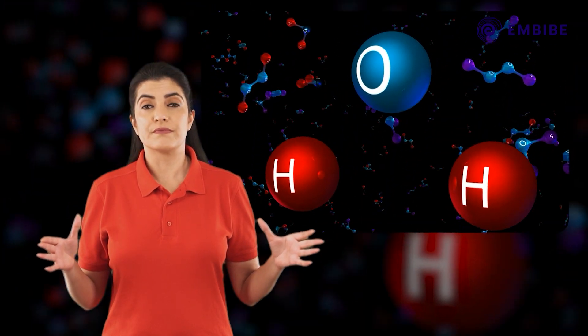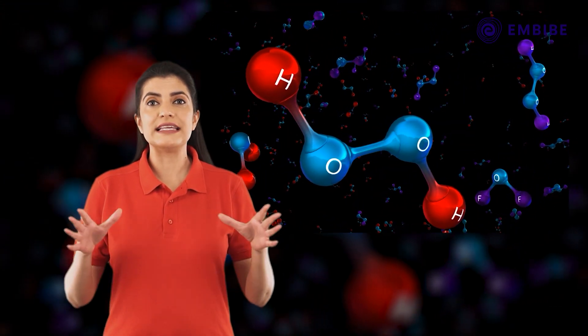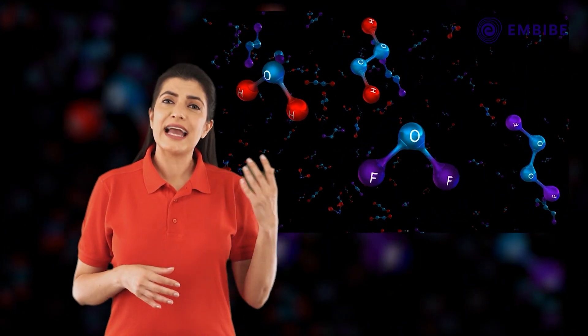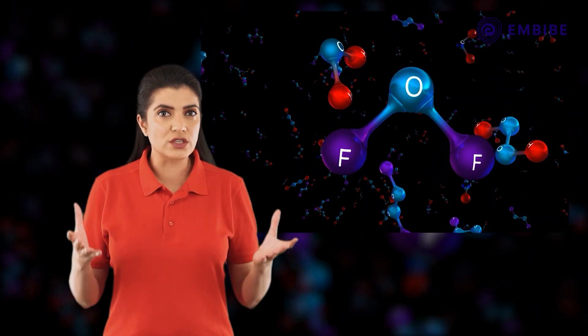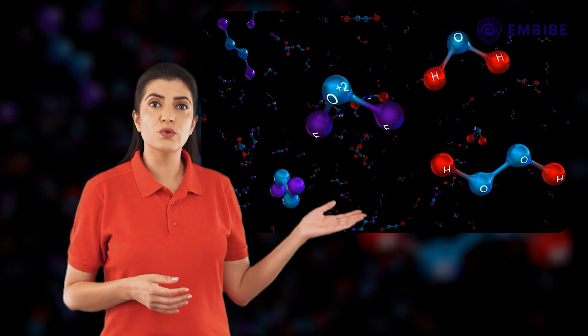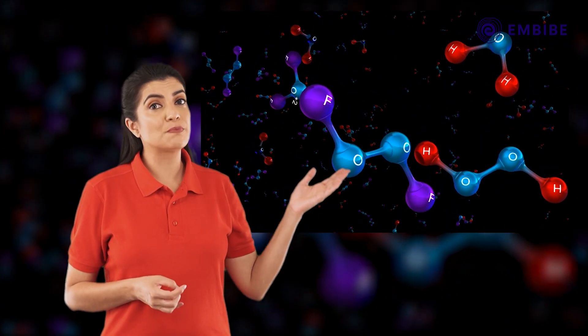Rule four: in most compounds of oxygen, the oxidation number of oxygen is considered to be −2. But as an exception, it is −1 in peroxides — for example, in hydrogen peroxide the oxidation number of oxygen is −1. On the other hand, in fluoride compounds, for example in oxygen difluoride, the oxidation number of oxygen is +2, and in dioxygen difluoride it is +1.